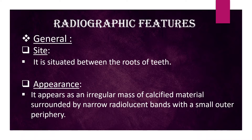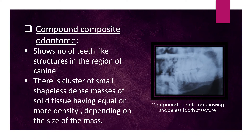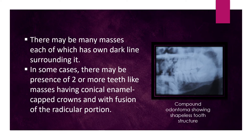Radiographic features: Generally, it is situated between the roots of the teeth. It appears as an irregular mass of calcified material surrounded by a narrow radiolucent band with a small outer periphery. Compound composite odontoma shows a number of tooth-like structures in the region of the canine. There is a cluster of small shapeless dense masses of solid tissue.